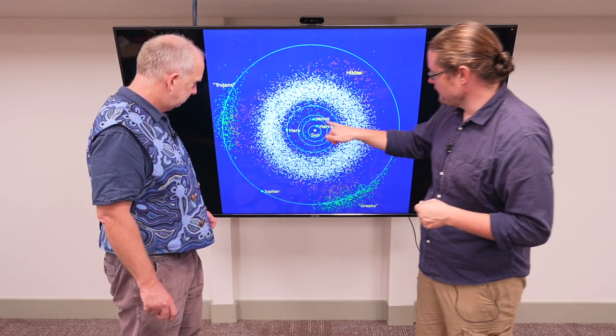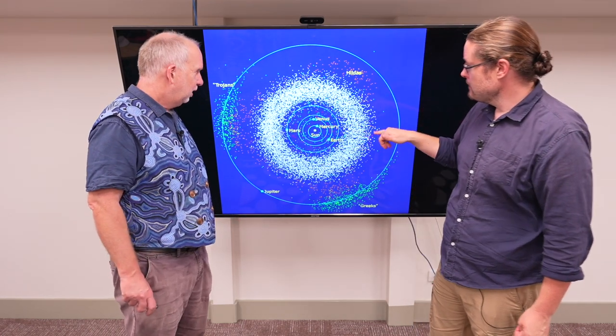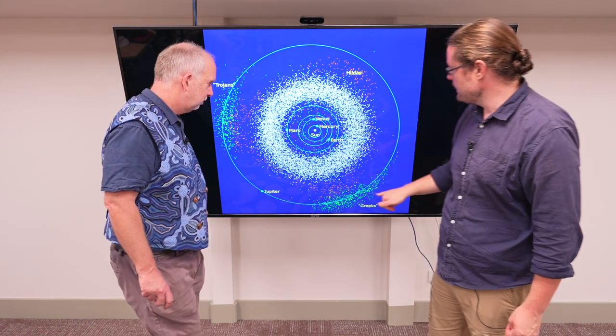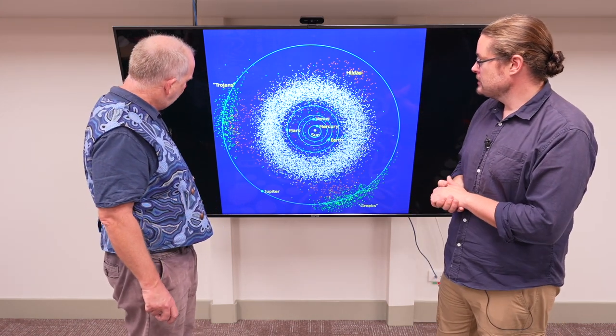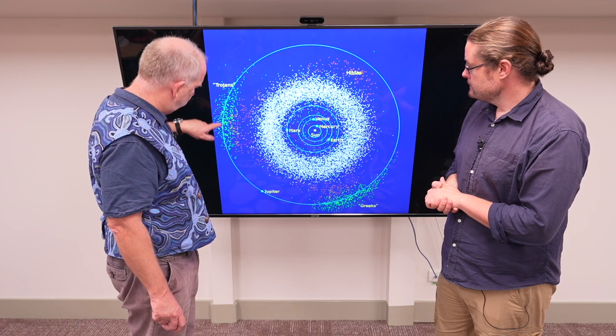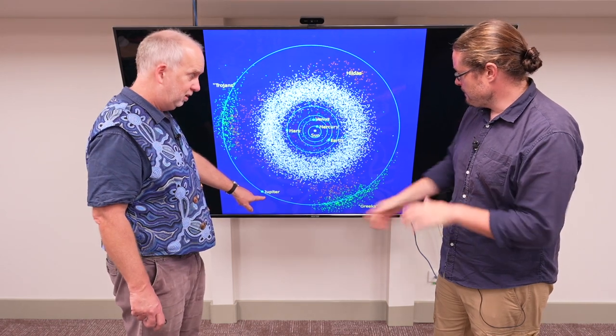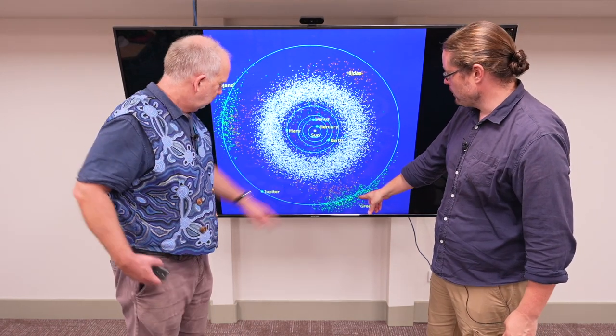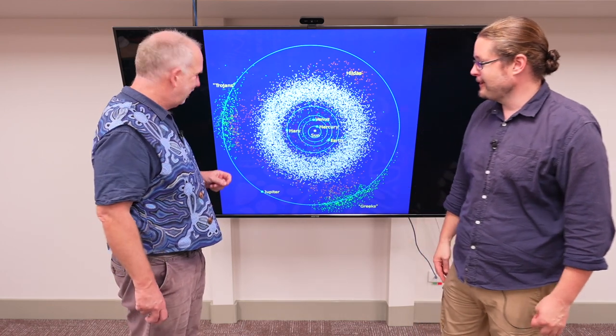So you said there are a few in the inner solar system, but the vast majority are in that gap. That's right, and there are two clusters called the Trojans, which are in Jupiter's orbit. They're called the Greeks and the Trojans, one before and one after Jupiter in its orbit.